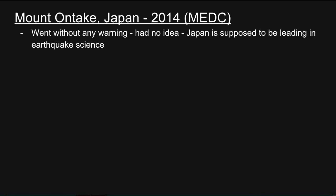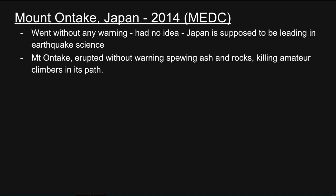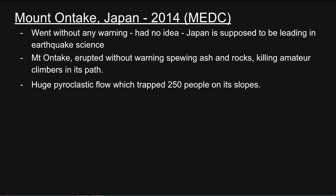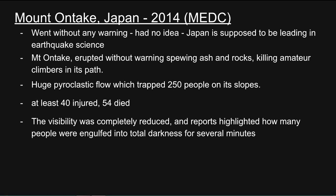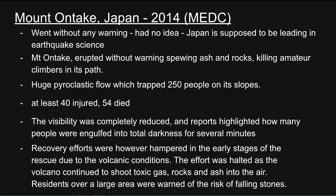Mount Ontake in Japan. It went without any warning — they had absolutely no idea, despite Japan supposedly being a leader in earthquake science. It erupted without warning, spewing ash and rocks and killing amateur climbers in its path. Huge pyroclastic flows trapped 250 people on its slopes; at least 40 were injured and 54 people died. Visibility was completely reduced and reports highlighted how many people were engulfed in total darkness for several minutes. Recovery efforts were hampered in the early stages of the rescue due to volcanic conditions; the effort was halted as the volcano continued to shoot toxic gases, rocks and ash into the air. Residents over a large area were warned of the risk of falling stones. Thank you for watching and I'll catch you in part three of the Tectonic series.